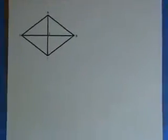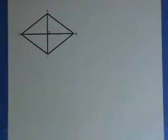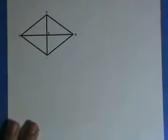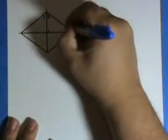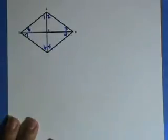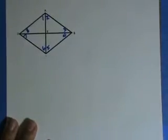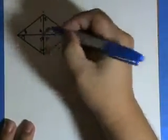So, like last time, I'm going to number these angles: one, two, three, four, five, six, seven, eight — and we'll label these two nine, ten, eleven, twelve.